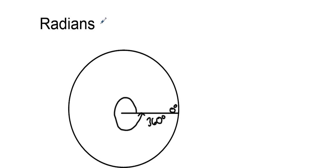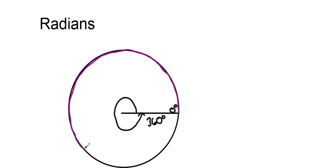Radians are a more exact measure. What radians do is actually take a circle and break it into arc lengths. So what a radian does is create a ratio — a radian is calculating the length around the whole circle.